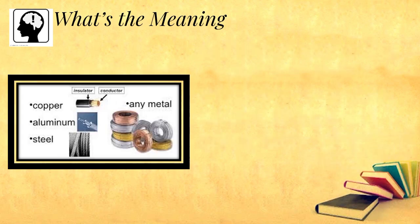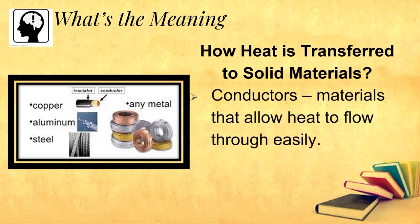There are materials that allow heat to flow through easily. We call them conductors. Metals are good conductors. That is why we use them as cooking utensils, because heat moves fast through the metal pan to the food. Examples of conductors are copper, aluminum, steel, or any metal.